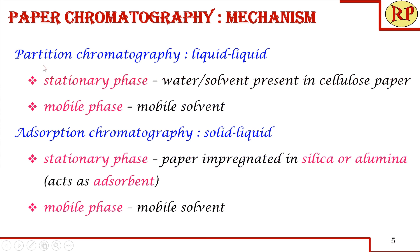The mechanism behind this technique is partition chromatography, which is a liquid-liquid phase technique. Although the filter paper is made of cellulose, the water present inside the paper actually acts as the stationary phase, and the developing solvent acts as the mobile phase. Another mechanism is adsorption chromatography, a solid-liquid phase technique, where the paper is impregnated with silica or alumina, which acts as an adsorbent — similar to TLC (thin layer chromatography). The common mechanism followed in paper chromatography is partition chromatography.